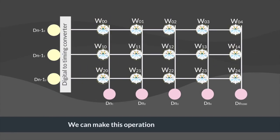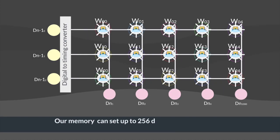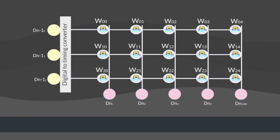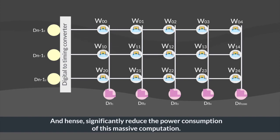We can make this operation simultaneously. Our memory can set up to 256 different level multipliers in each memory cell for precise program control, and hence significantly reduce the power consumption of this massive computation.